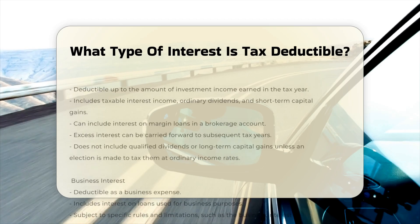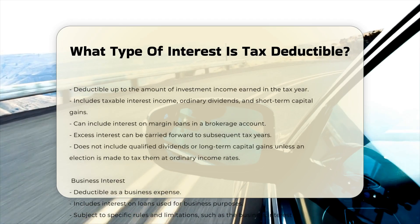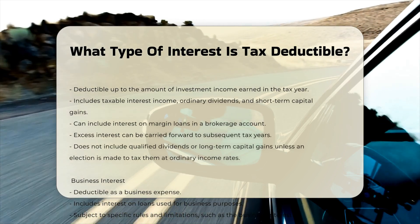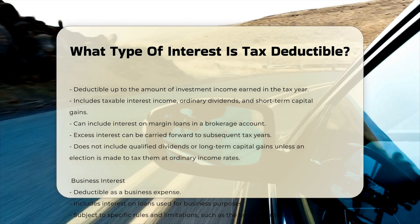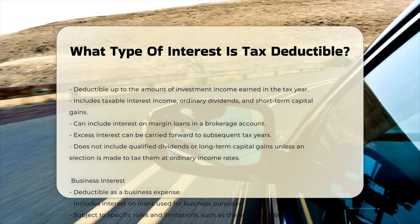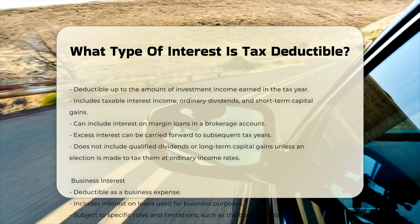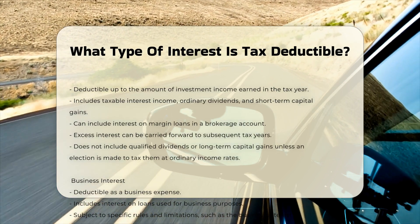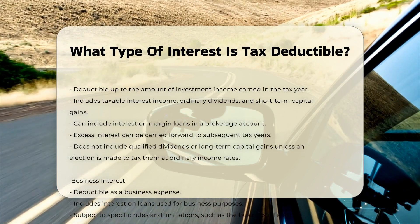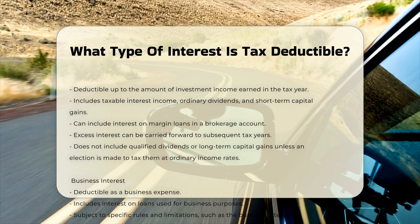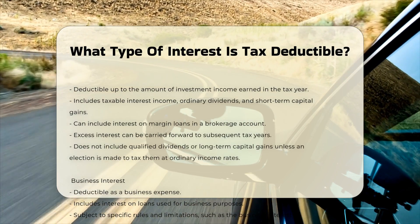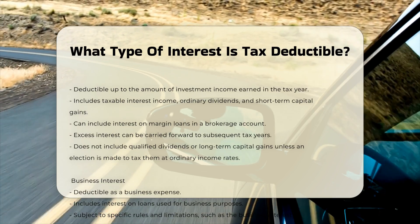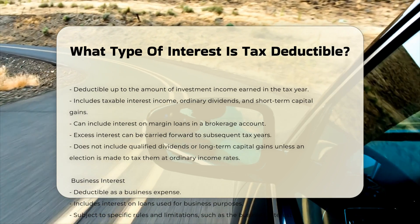Qualified residence interest. Interest on mortgages secured by a primary home or a second home can be deducted. The deduction is limited to interest on the first $750,000 of mortgage debt for loans taken out after December 15, 2017. For loans taken out before this date, the limit is $1 million.